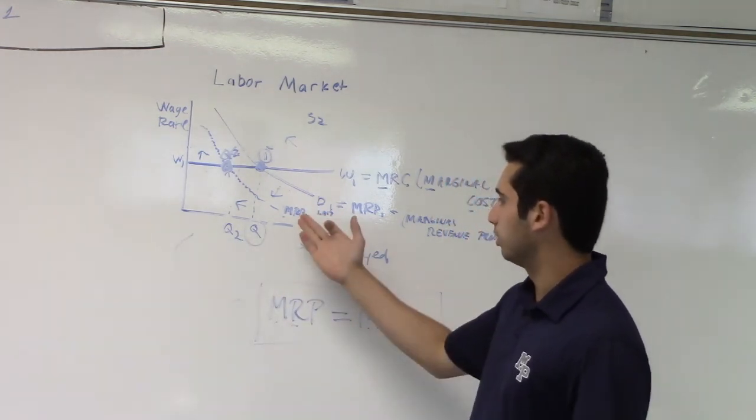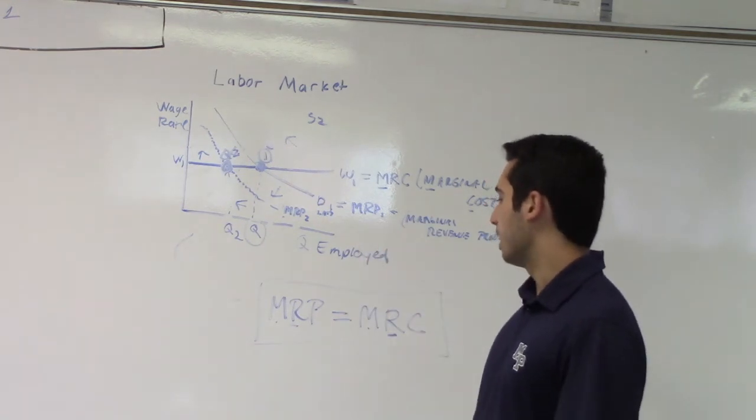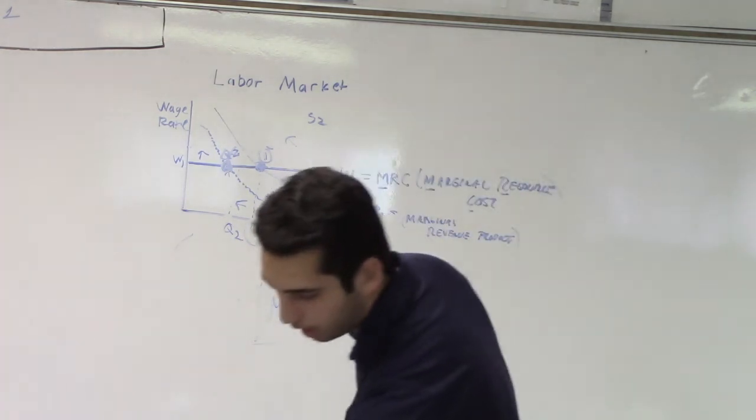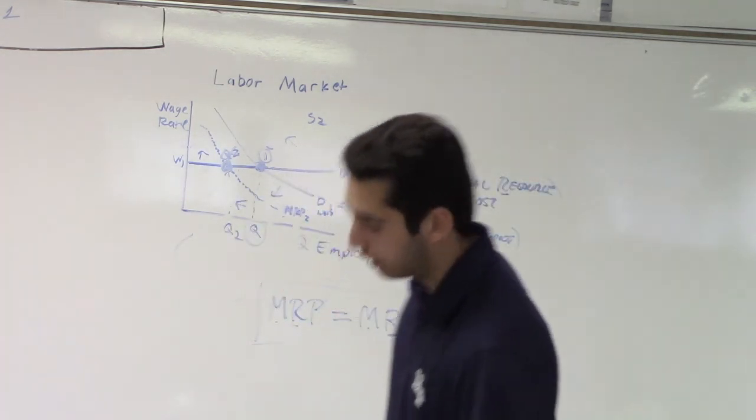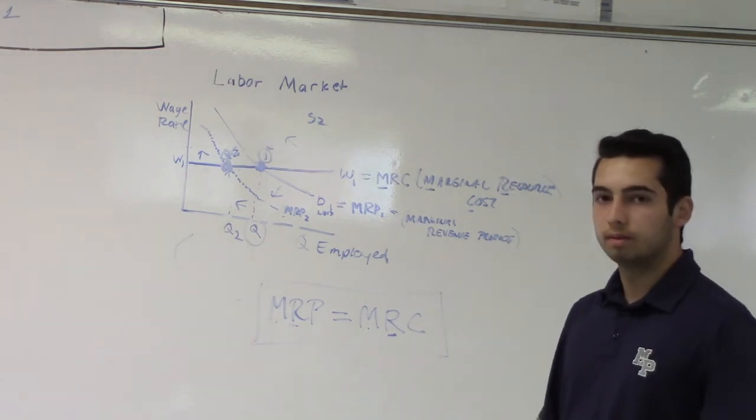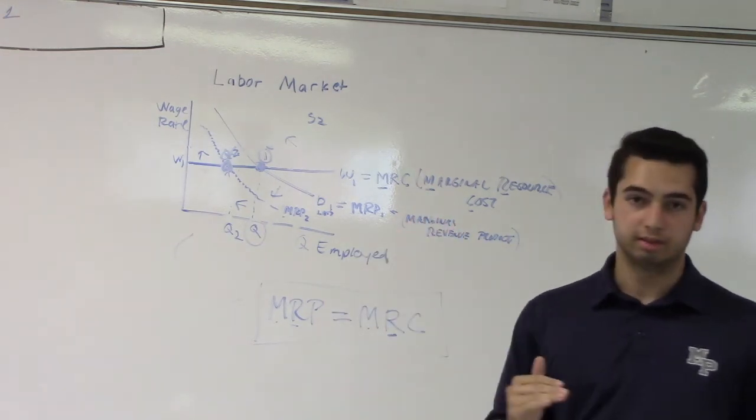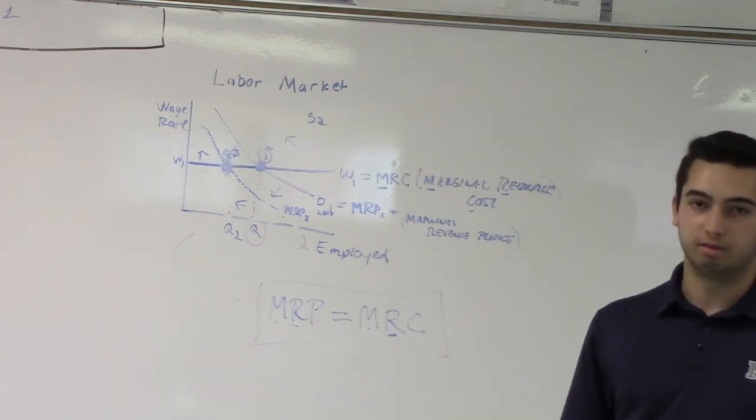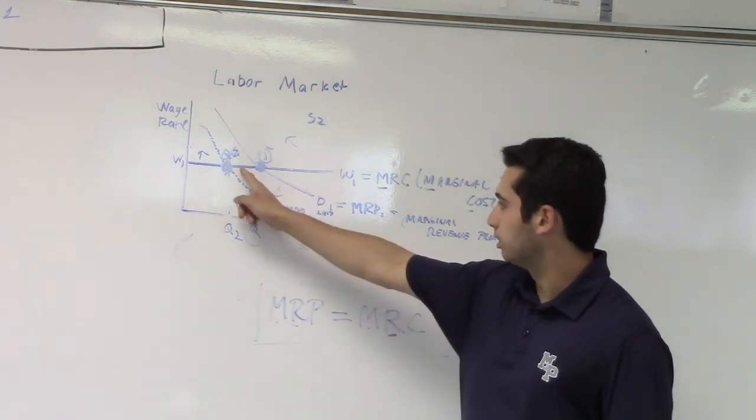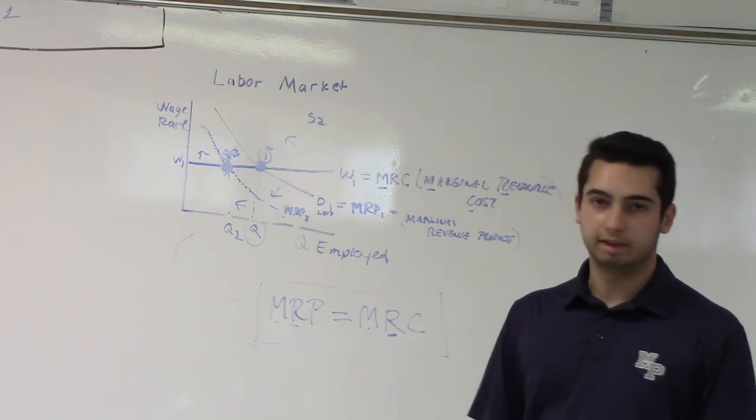And demand can also be translated as the MRP, which is the marginal revenue product. And because the MRP decreases with the lack of workers, you see the quantity go down, and you can see that Q number two is on the left, which indicates it.